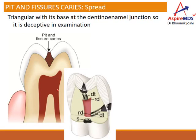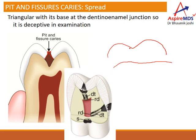Let's see how caries spreads in pit and fissure caries as well as smooth surface caries. In pit and fissure caries, the caries will start in the form of a triangle with the apex at the top, and as it goes towards the dentine it will spread in a wider manner. So if this is the tooth, this is enamel, and then we have dentine — the caries will start as a pit only but as it goes downwards it will get wider.